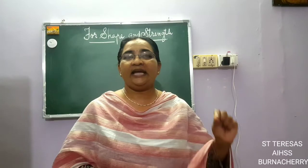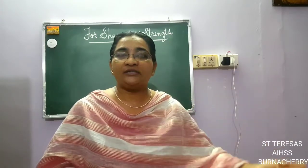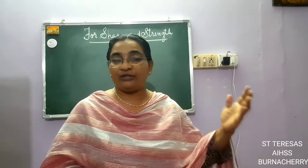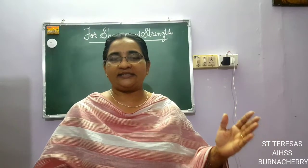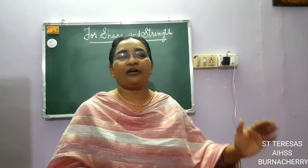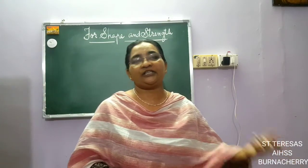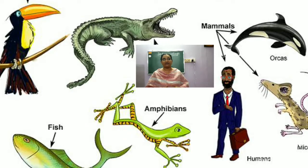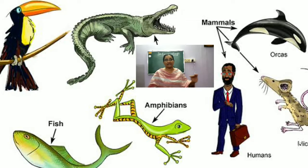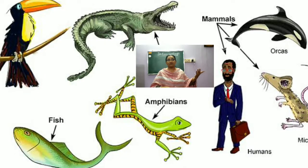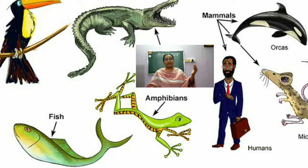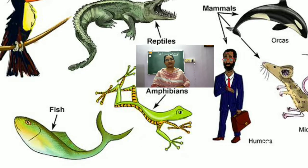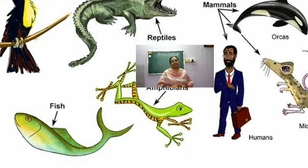Exoskeleton means the skeleton which is outside the body — 'exo' means outside. The outer hard covering that gives organisms shape and protection is called exoskeleton. Other examples include the scales of fish and reptiles like crocodiles, feathers of birds, hair, horns, hooves, and nails of animals — all are remnants of the exoskeleton.